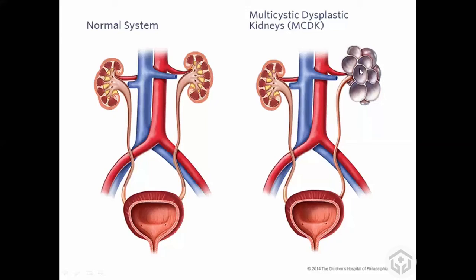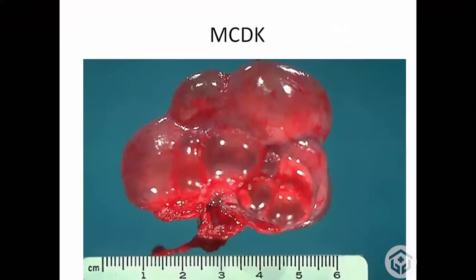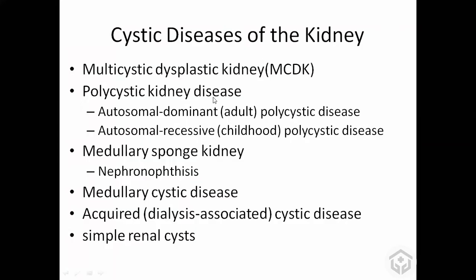You can leave the multicystic dysplastic kidney. About 20 years back, we tended to remove these kidneys, thinking they could become cancer or cause hypertension. But now we have concluded we are not going to remove the kidneys unnecessarily - we leave it, and only remove it if it is causing any trouble. In a resected specimen you will see multiple cysts not producing any urine - that is multicystic dysplastic kidney.